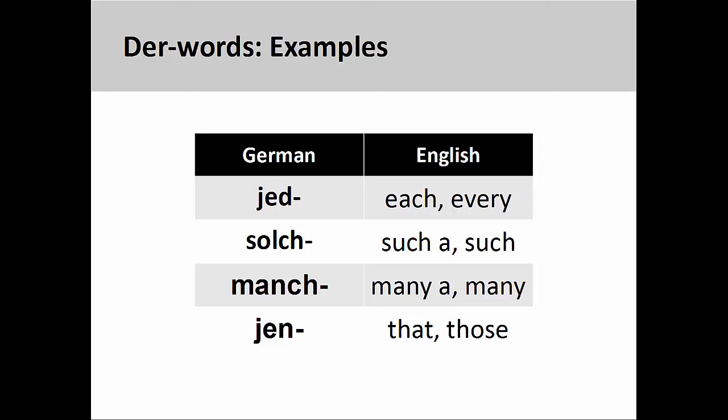There are several different der-words in German. Some of the more frequently used include: jed (each, every), solch (such), manch (many), and jen (that, those). Like definite articles, the endings for these der-words are determined by the number, gender, and case of the noun they modify.